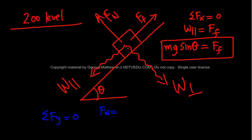Net force along the vertical is equal to zero, so normal force equals w perpendicular, which equals mg cos theta. The maximum value of the force of friction is given by mu times normal force, which is mu times mg cos theta.